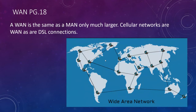The wide area network is greater than 50 kilometers — similar in structure to a MAN but much larger. Cellular networks and DSL networks fall under this category. A wide area network connects us all — we tend to call this the internet.